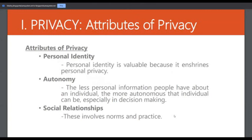The attributes of privacy are personal identity, autonomy, and social relationships. Personal identity is valuable because it enshrines personal privacy. Autonomy means the less personal information people have about an individual, the more autonomous that individual can be, especially in decision making. If you share a lot of information on social media, you are opening your personal life to those who have access to your posts, which can affect your decision making.